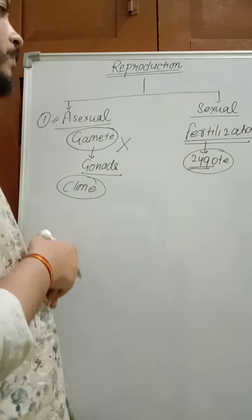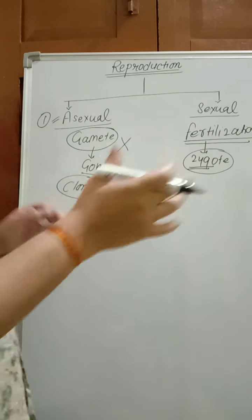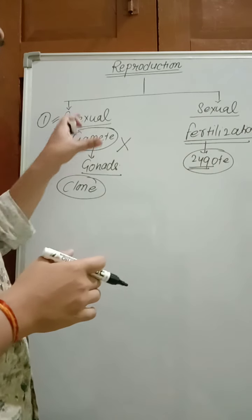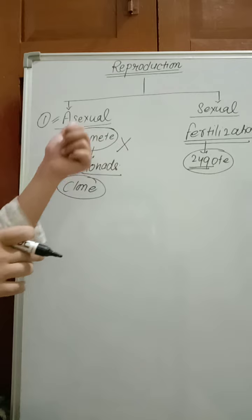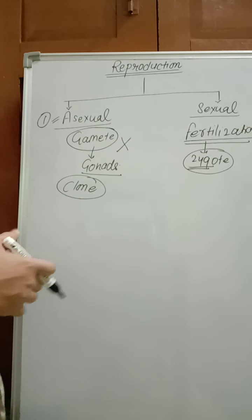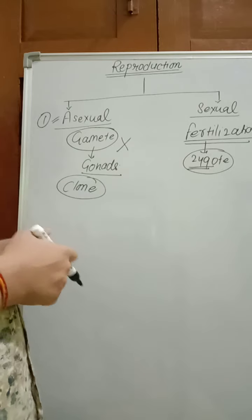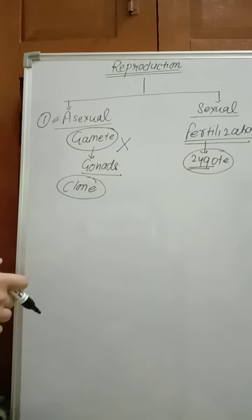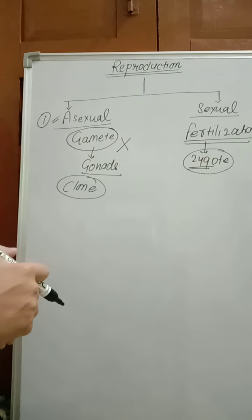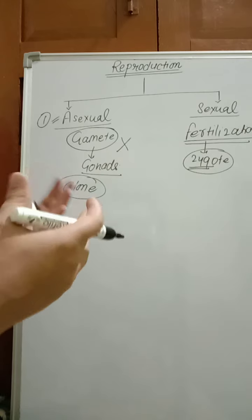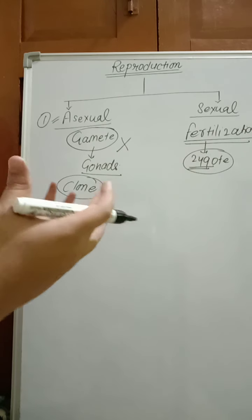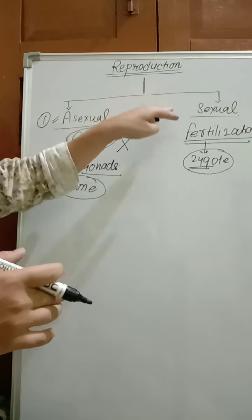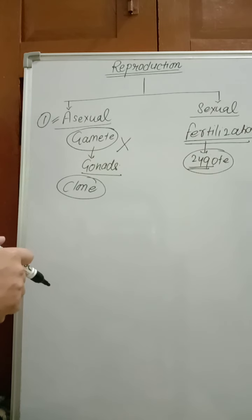In sexual reproduction, clones are not produced — there is variation and new species can form. Which method has more chance of survival? The answer is sexual mode of reproduction. Organisms having sexual mode of reproduction have more chance of adaptation due to variation. They have a high chance to adapt according to conditions, so they have more chance of survival than asexual mode of reproduction.